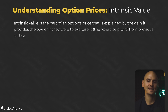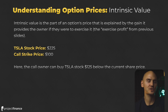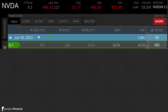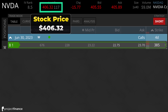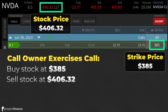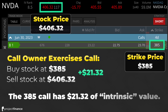Intrinsic value is the part of an option's price that is explained by the gain it provides the owner if they were to exercise it — the exercise profit. For example, if Tesla's stock price is at $225 and we are looking at a call with a strike price of $100, the call owner can buy Tesla stock $125 below the current stock price. Therefore, this 100 strike call option has $125 of intrinsic value. Here's another example: Nvidia with a stock price of $406.32 and a call option with a strike price of $385. If the call owner exercises, they will buy stock at $385 and sell at $406.32, making a gain of $21.32 per share. Therefore, this $385 call option has $21.32 of intrinsic value.